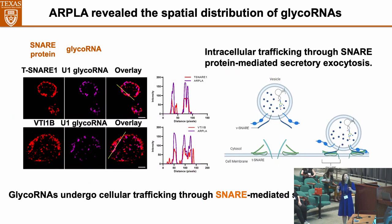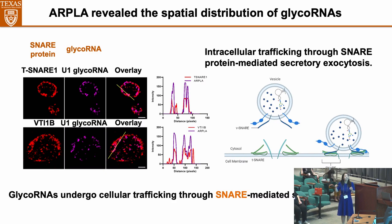After validating the method, we used the tool to answer biological questions. The first question was: how does glycoRNA traffic to the cell membrane? Our hypothesis was that it may traffic through SNARE protein-mediated secretory exocytosis. To validate this, we chose two important markers — V-SNARE and T-SNARE proteins — and stained them with antibody, producing a red signal. We then stained glycoRNA using our method, called RPLA, generating a purple signal. Overlapping the two channels, we found the red signal co-localized with the purple signal, indicating that glycoRNA undergoes cellular trafficking through SNARE protein-mediated secretory exocytosis.